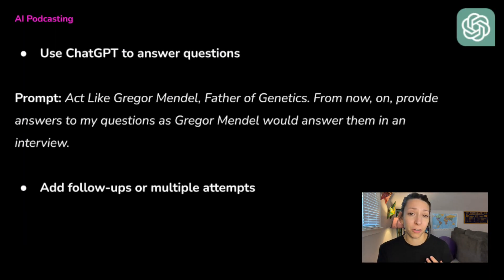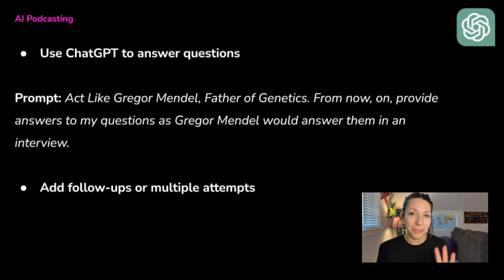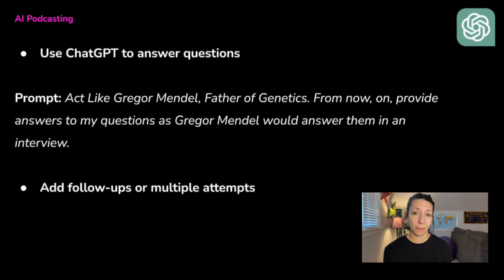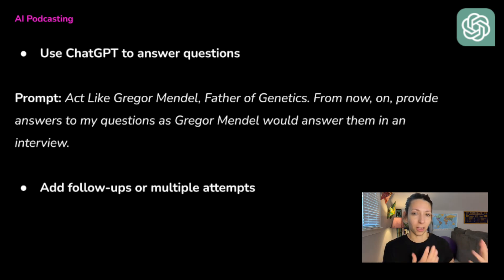You can also give it other parameters like word count limits on responses, or ask it to have a particular personality if you know something about the person you're researching. You may also want to ask it to avoid topics beyond its time period. I was talking to Gregor Mendel as if he were a ghost who knew what genetics was, but genetics as a field didn't really get started until about 30 years after he died, so some of his answers were a bit off base.